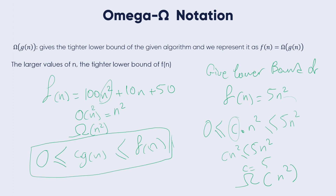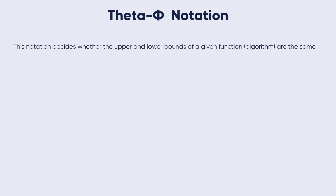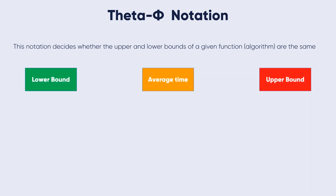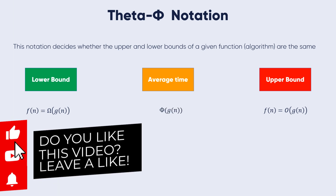It is the same — for some examples the Omega notation is the same as the Big-O notation. Theta notation: this notation decides whether the upper and lower bounds of a given function or algorithm are the same. The average running time of an algorithm is always between the lower bound and the upper bound. If the upper bound O notation and the lower bound Omega notation give the same result, then the Theta notation will also have the same rate of growth.